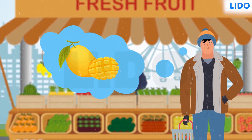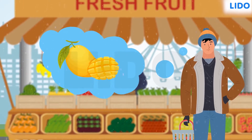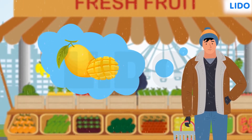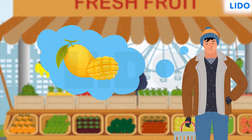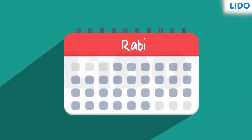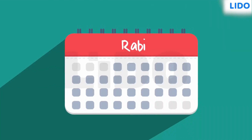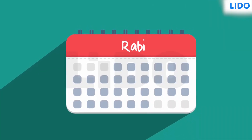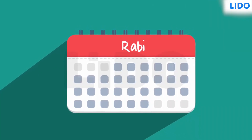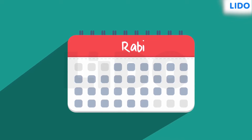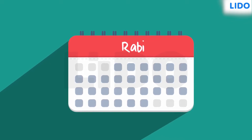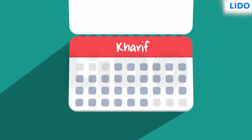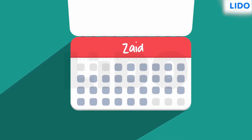So Ansh is going to have to make do with strawberries for the time being. Did you know that farmers in India have a cropping calendar? They follow it for the three types of crops: Rabi, Kharif and Zaid.